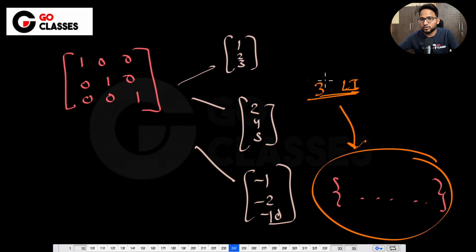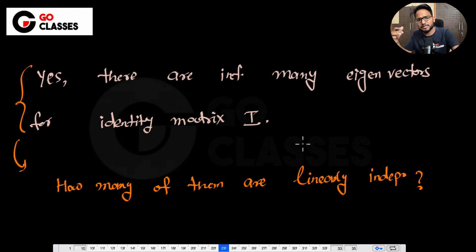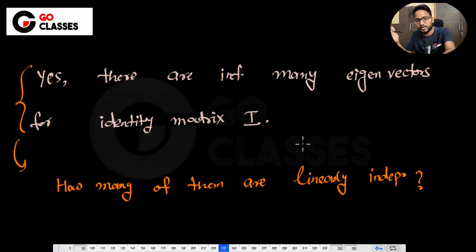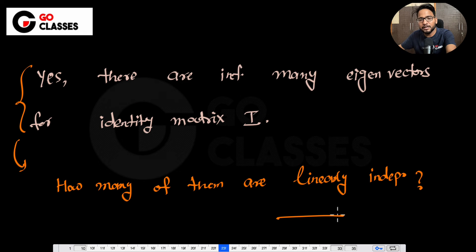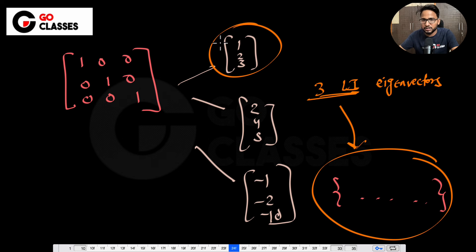So there are 3 linearly independent vectors, but these vectors are a little special — that's what we're calling eigenvectors. So, 3 linearly independent eigenvectors. That is how you understand it: there are infinitely many eigenvectors, but for this 3×3 identity matrix, just 3 of them are linearly independent because they are in R3.